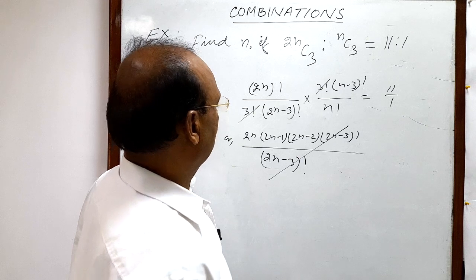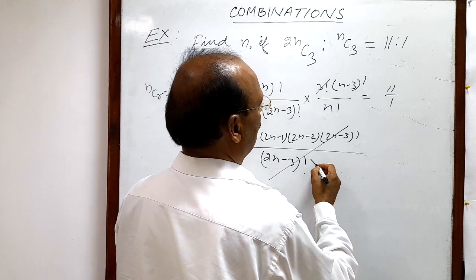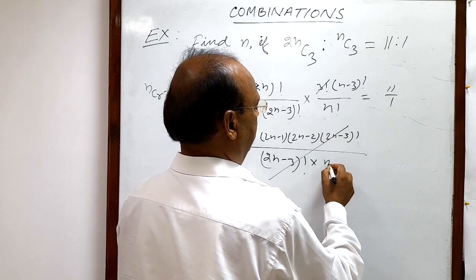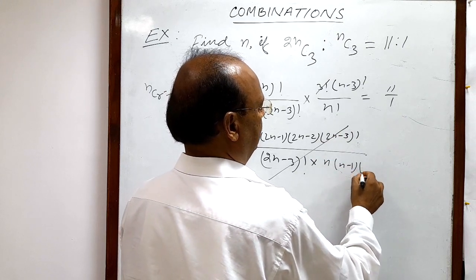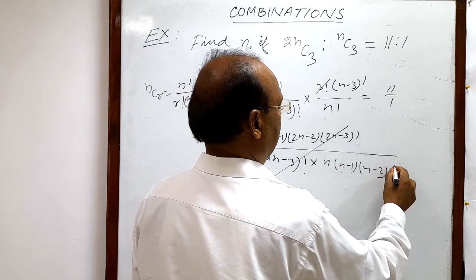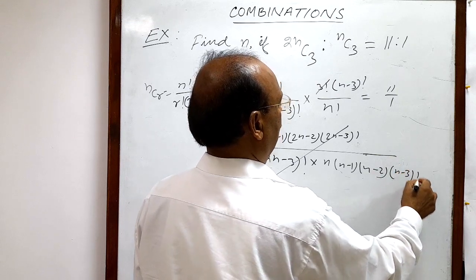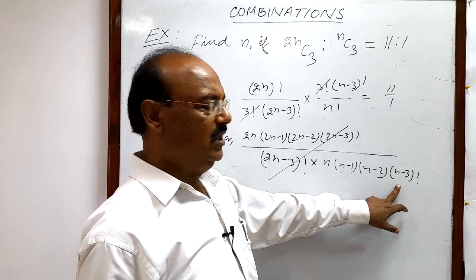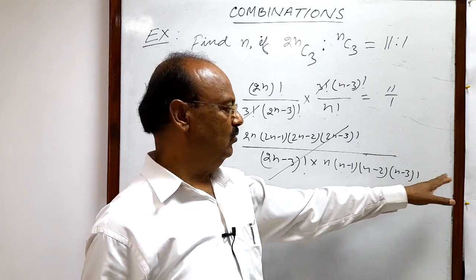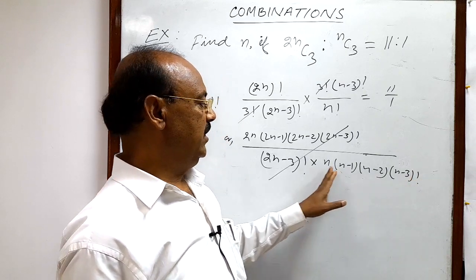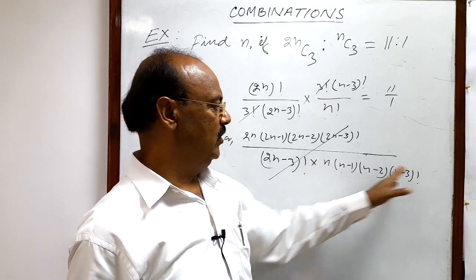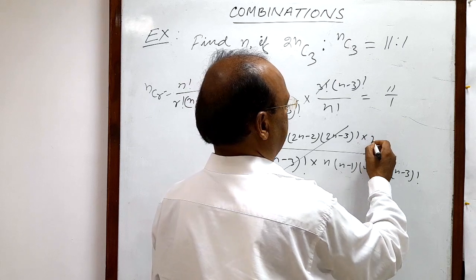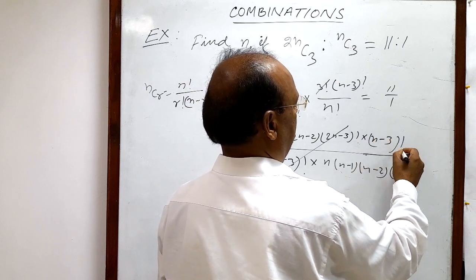Similarly, n factorial is expanded because n minus 3 whole factorial is a continued multiplication from 1 to n minus 3, which continues up to n, so finally 1 to n is n factorial.